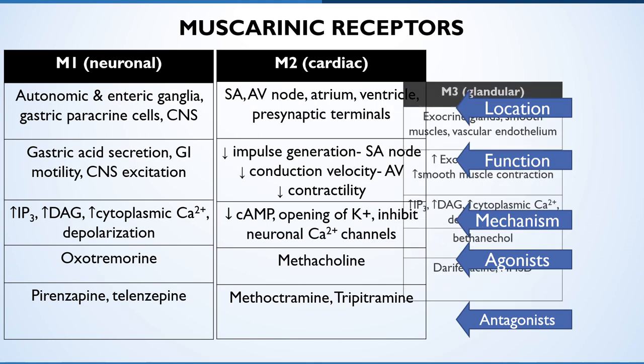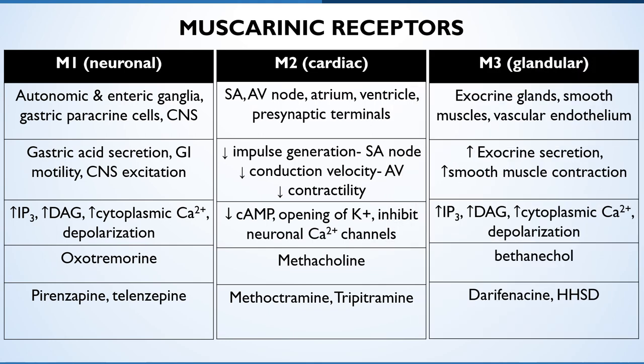The third is the glandular type, M3 receptors. These are located mainly on glandular and visceral smooth muscles. Their activation results in mainly excitatory effects: increase in sweating, bronchial and salivary secretions, and contraction of visceral smooth muscles. However, their activation also stimulates the release of nitric oxide from neighboring endothelial cells, causing relaxation of vascular smooth muscles. No selective agonist is available at present except bethanechol, which has prominent agonist action on these receptors. Selective M3 receptor antagonists are darifenacin and hexahydrosiladifenidol.